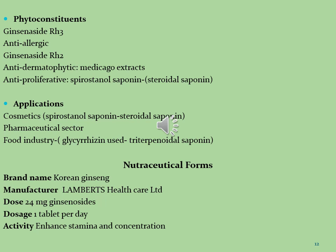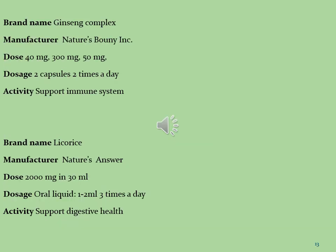Pharmaceutical brands of saponins used in food supplements: the first brand is Korean Ginseng, manufactured by Lambert's Healthcare Limited, dose 24 mg per day in tablet form, used to enhance stamina, concentration, and sex drive. The second product is Ginseng Complex, manufactured by Nature's Spawning Nutraceuticals, doses of 40 mg, 300 mg, and 50 mg per day in capsule form, two capsules twice a day, used to support the immune system. The third product is Licorice, manufactured by Nature's Answers, dose 2000 mg in 30 ml suspension, taken 1-2 ml three times a day, used to enhance digestive health.